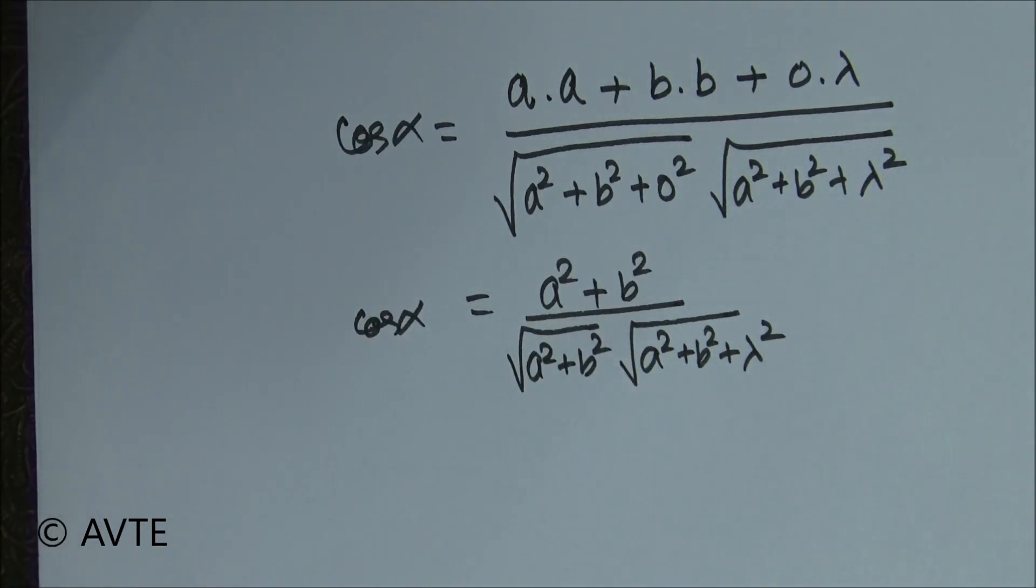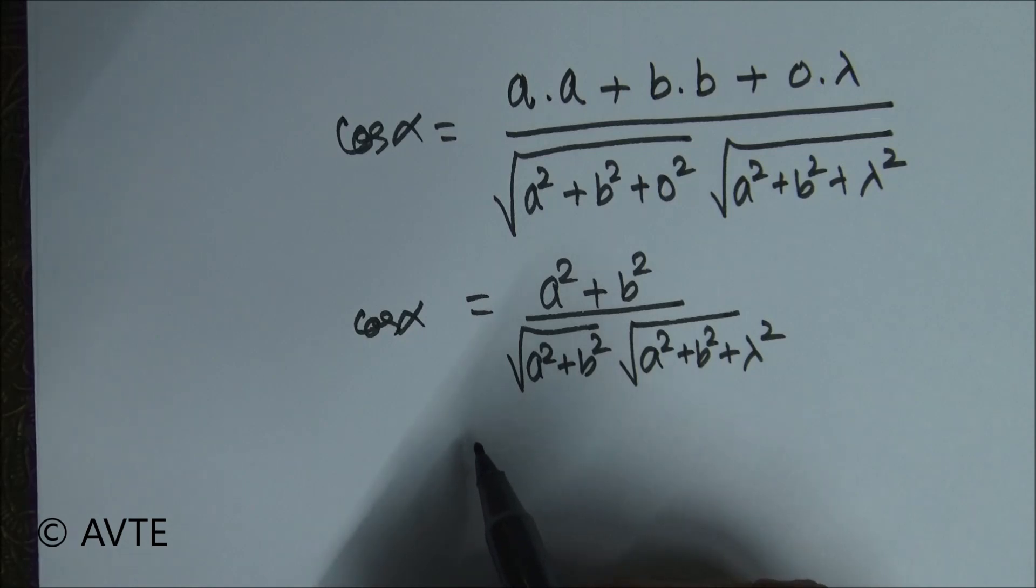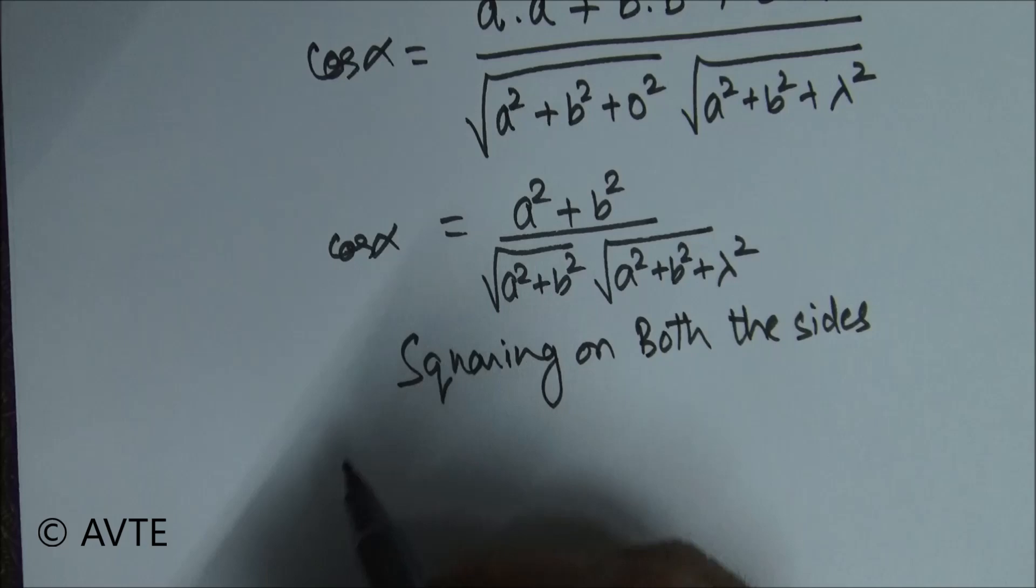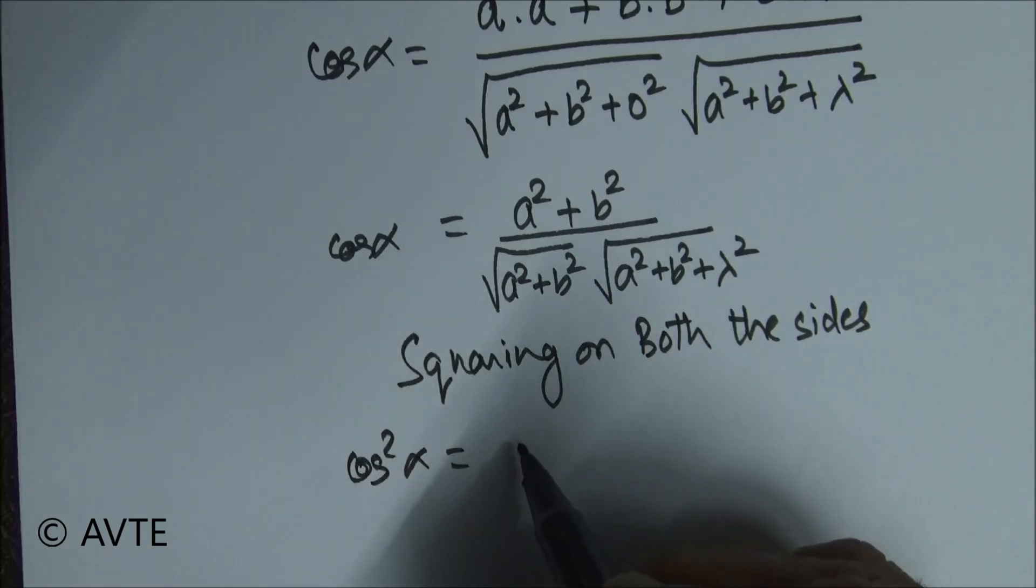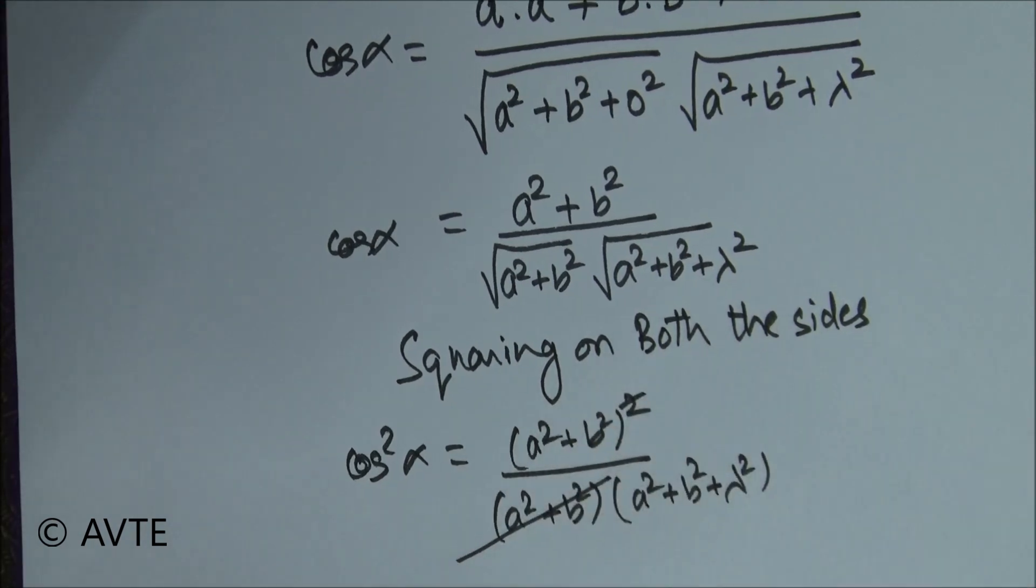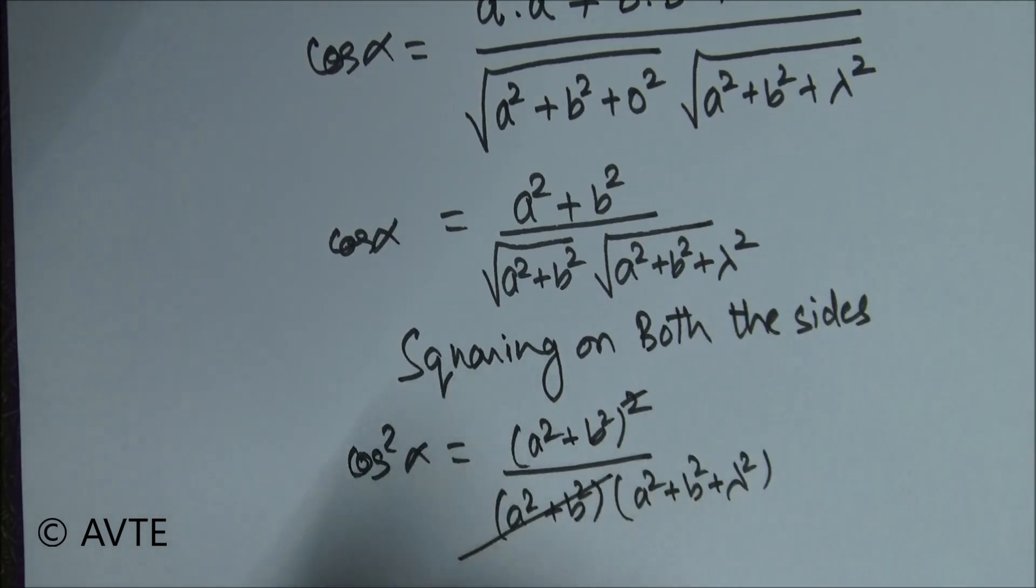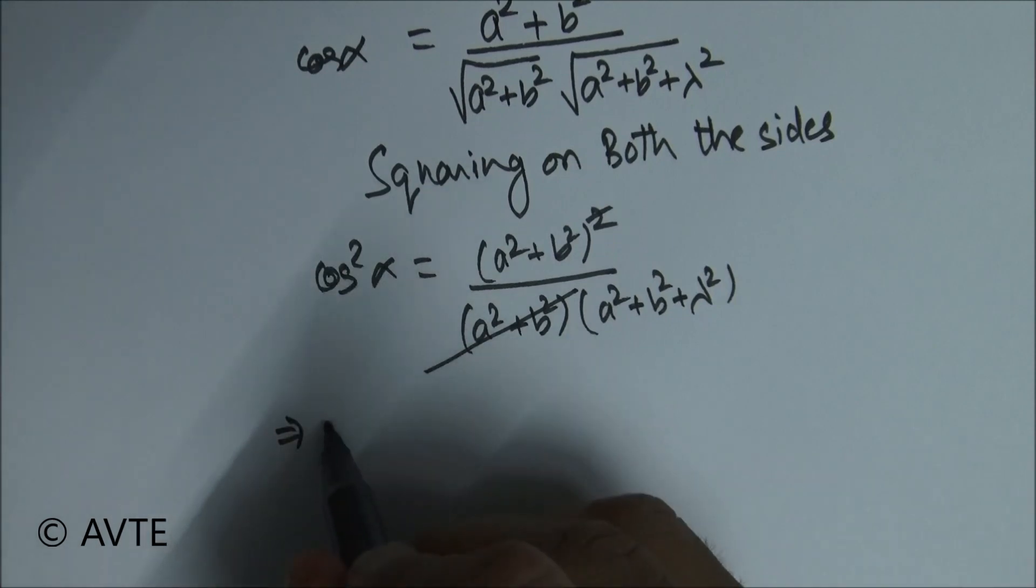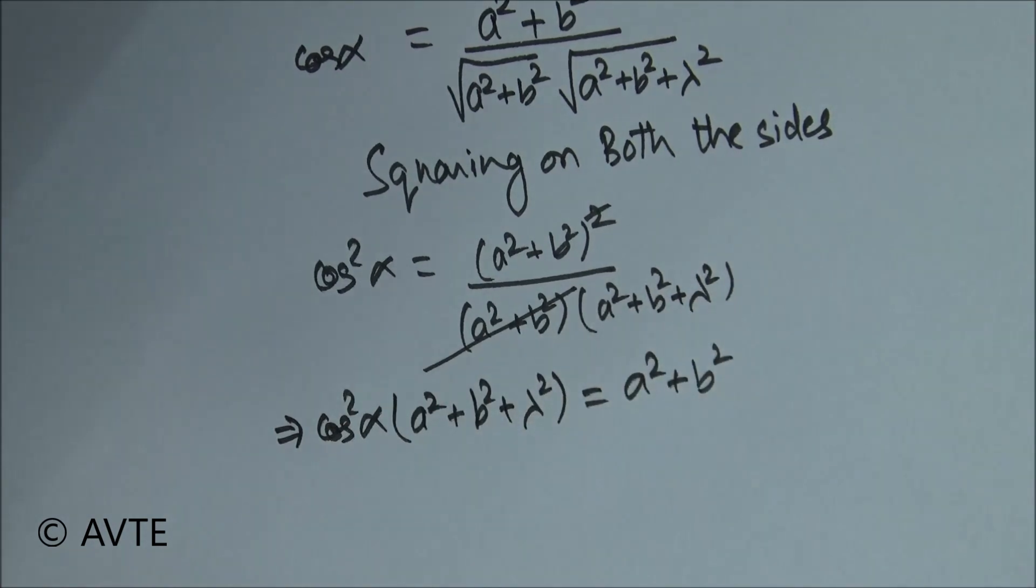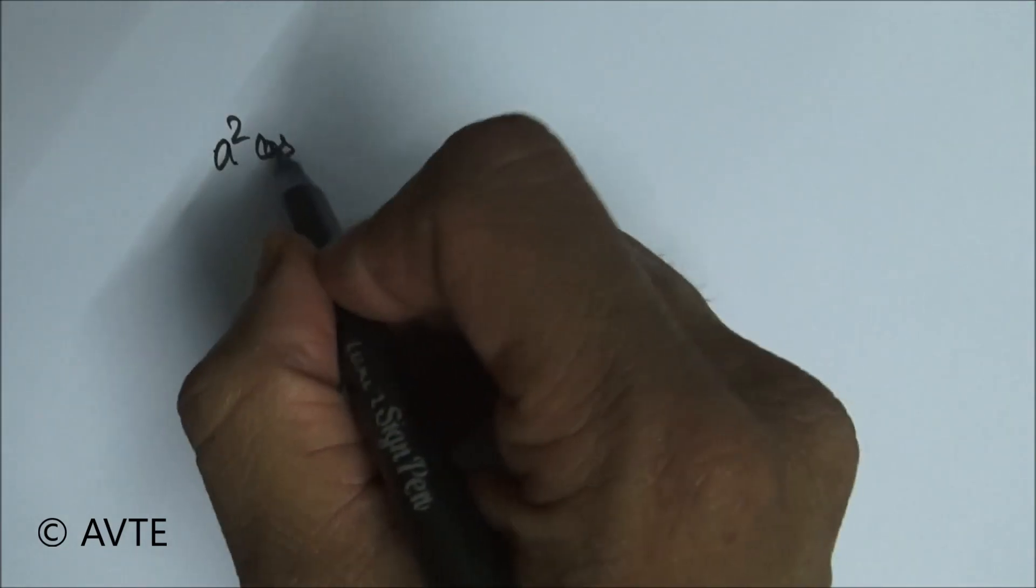the target is to get lambda, which is very simple. For that we need to do squaring.